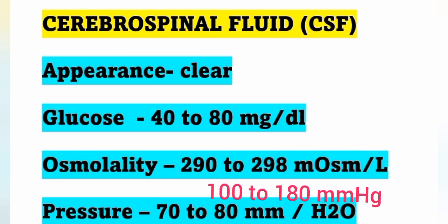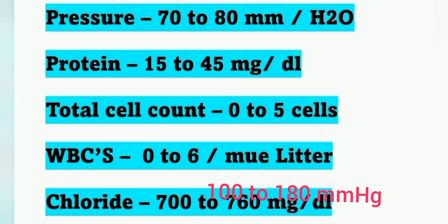In terms of mercury (Hg), CSF pressure is 100 to 180 mm Hg. The protein content in CSF is 15 to 45 milligrams per deciliter. Total count (TC) in CSF is 0 to 5 cells, WBC count is 0 to 6 per microliter, and chloride content in CSF is 700 to 760 milligrams per deciliter.